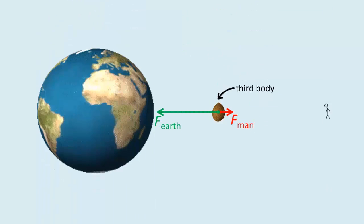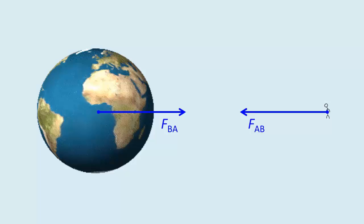On a third mass, yes, the Earth does exert a much stronger pull than a man. But between the Earth and the man, they pull each other equally strongly.